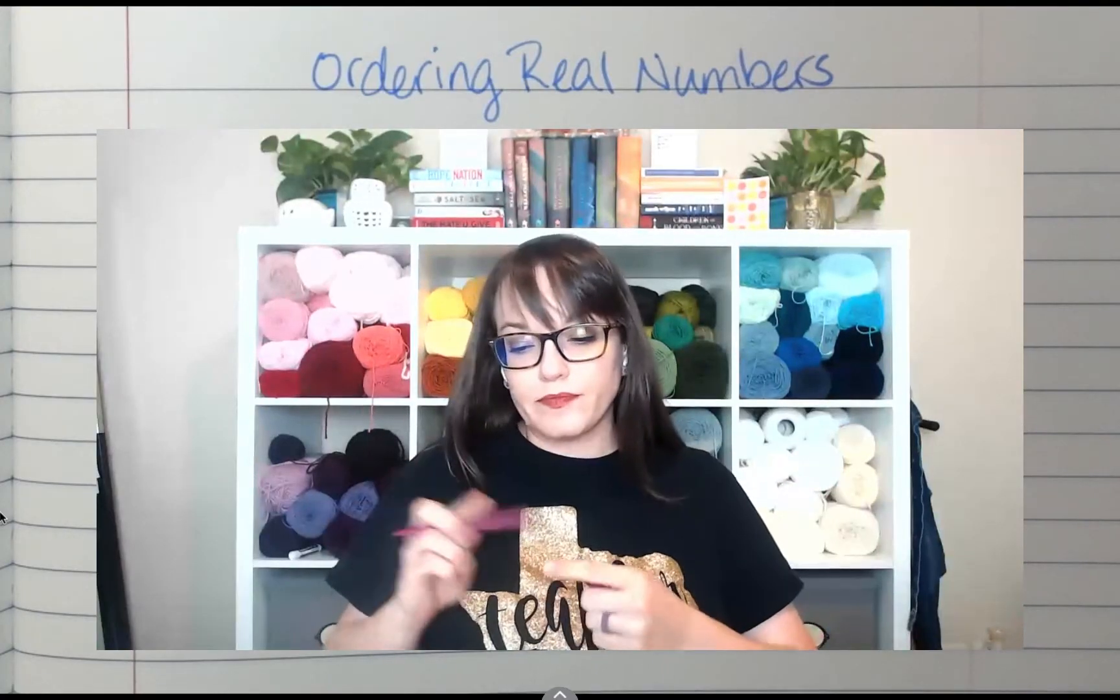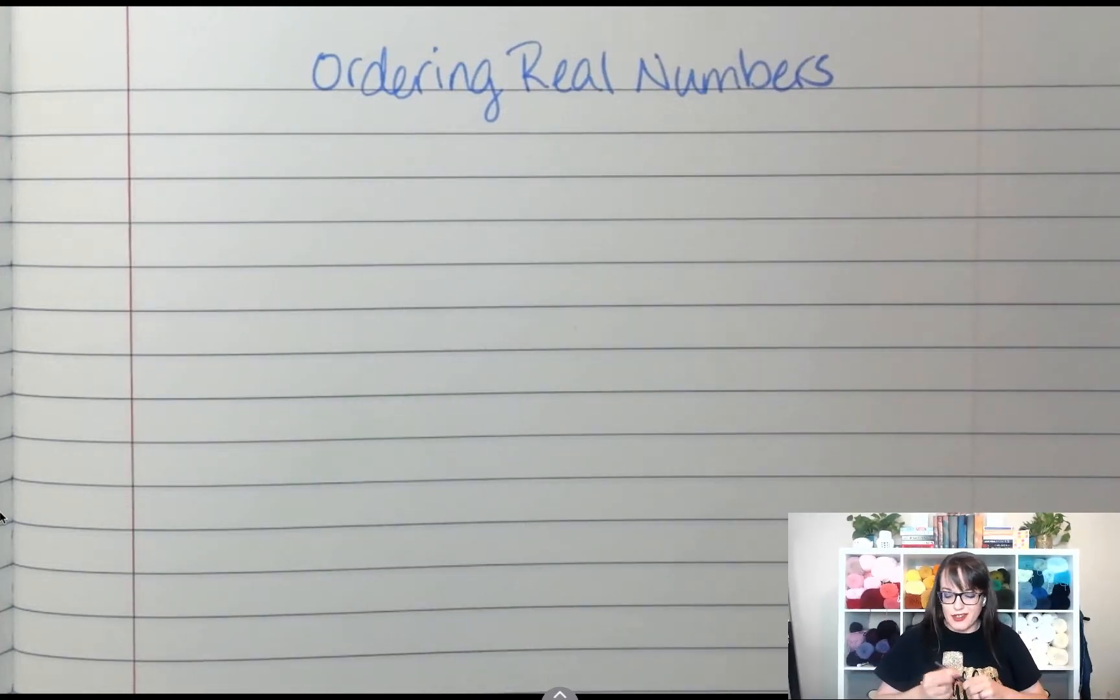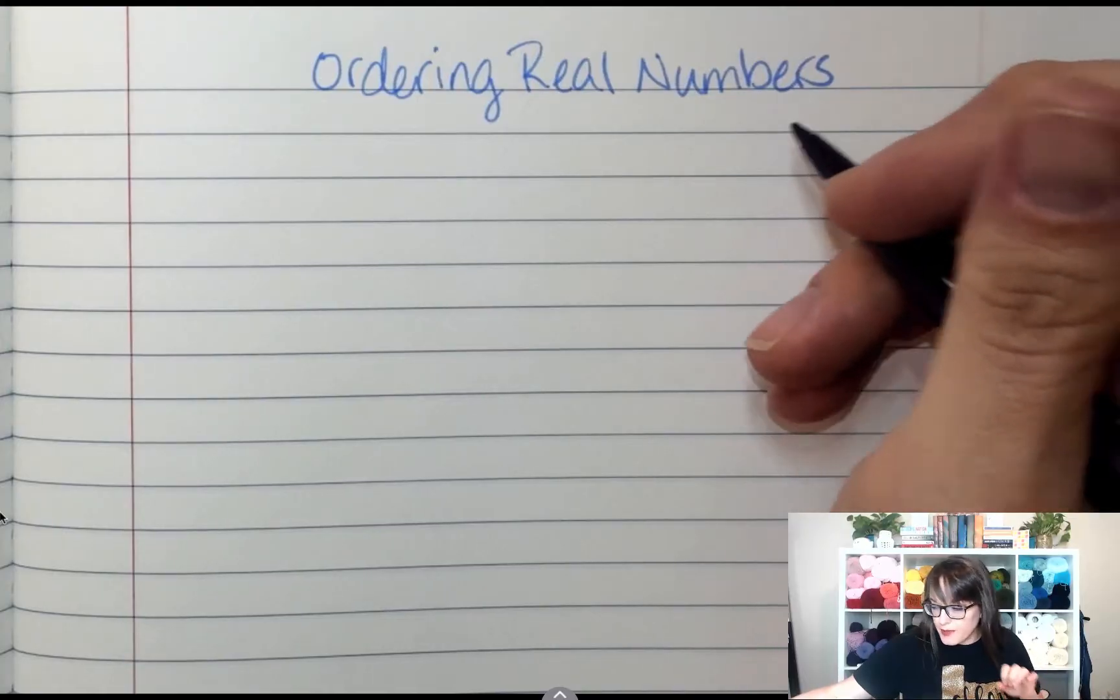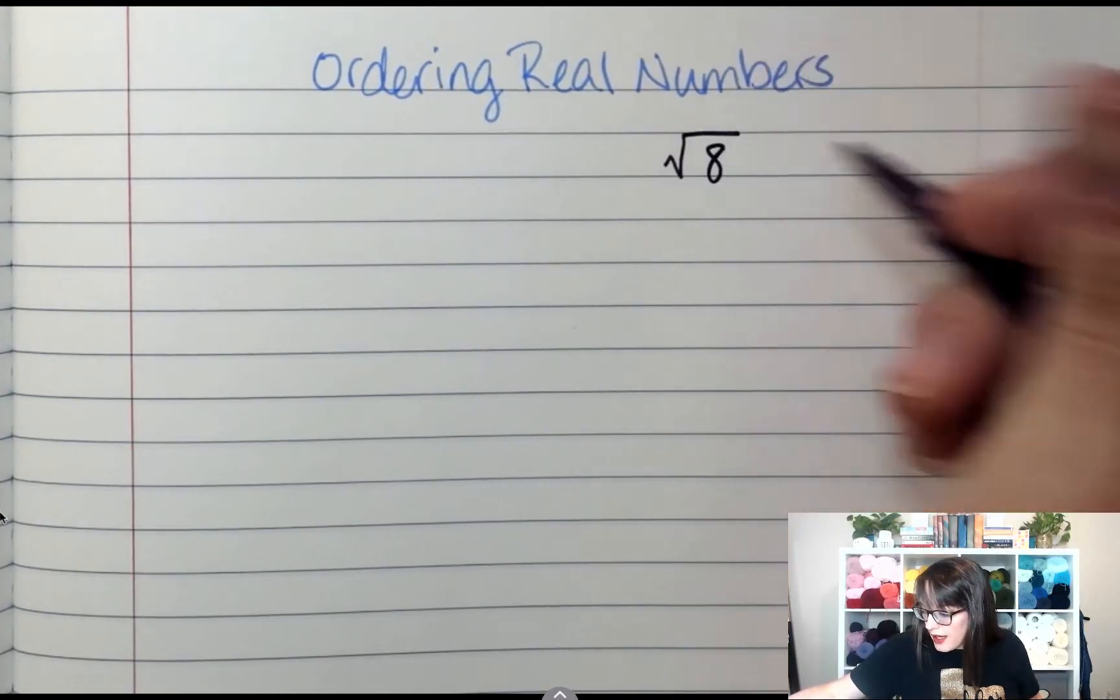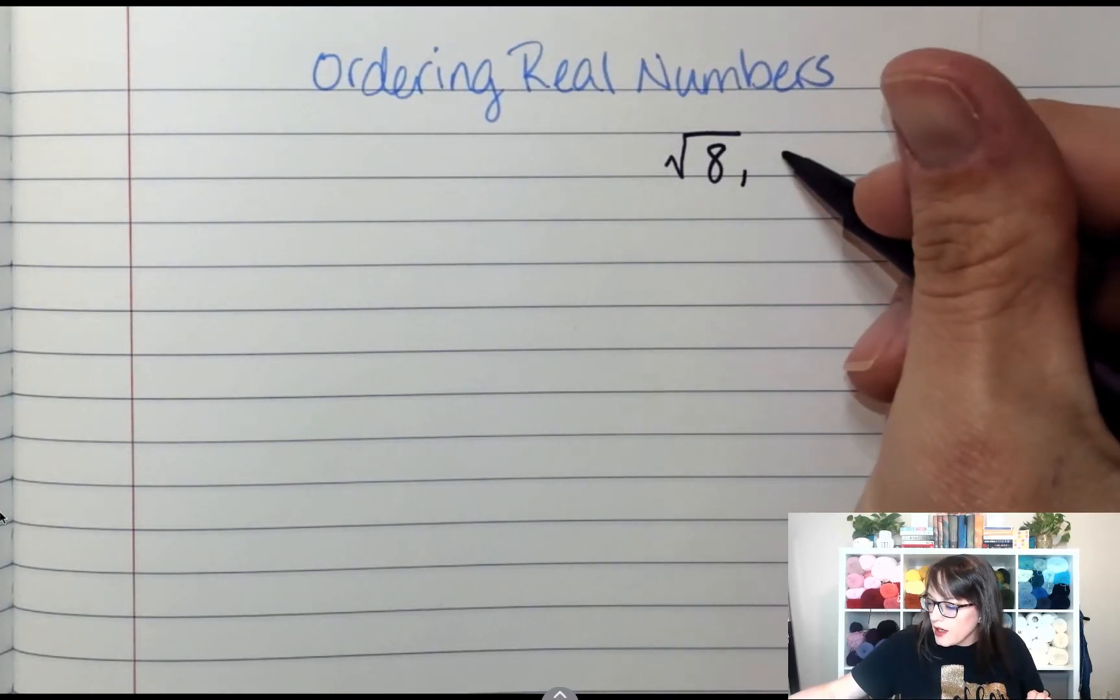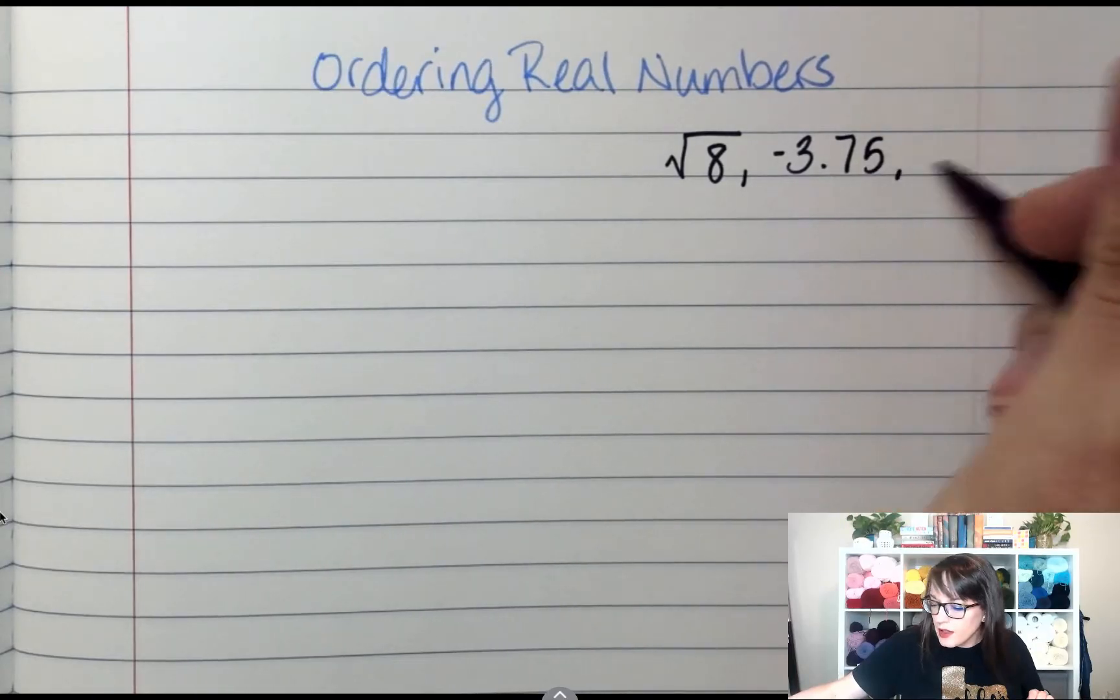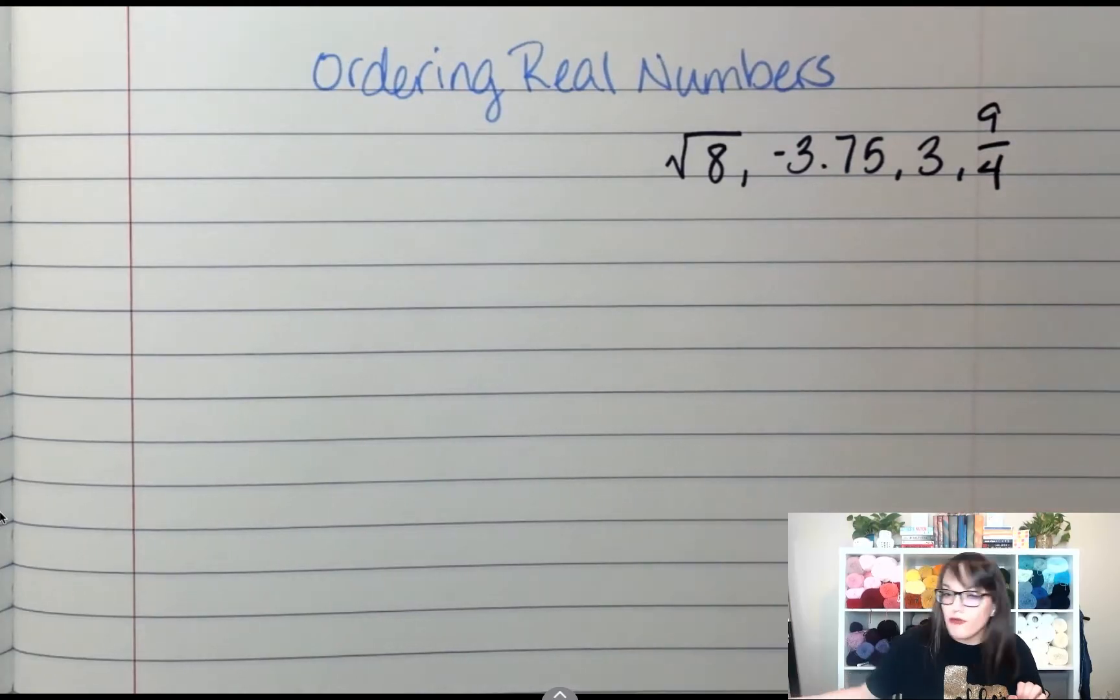Step one: let's look at an example because that's just the easiest way to explain this. If they give you four different types of numbers like the square root of 8—is the square root of 8 a perfect square? No, definitely not, it is an irrational number—and then negative 3.75, 3, and 9 over 4.